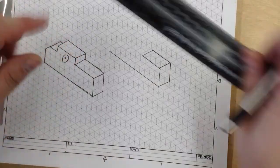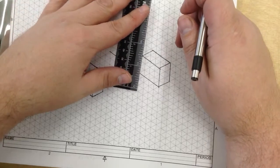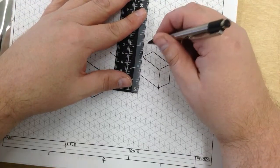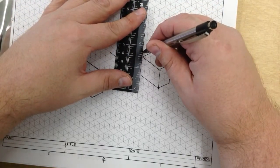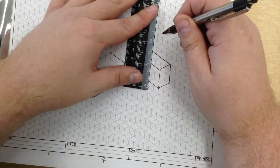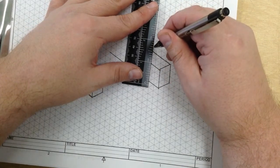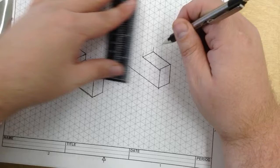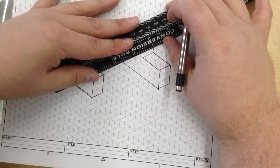It goes one-fourth of an inch up. So I am going to line up my ruler, and go up one-fourth of an inch. Connect my lines.